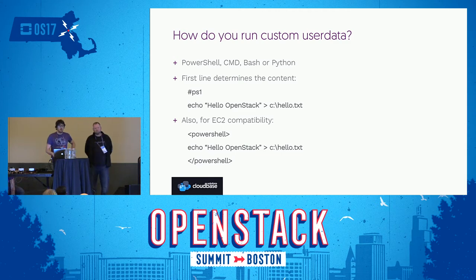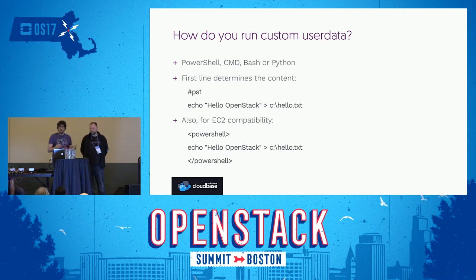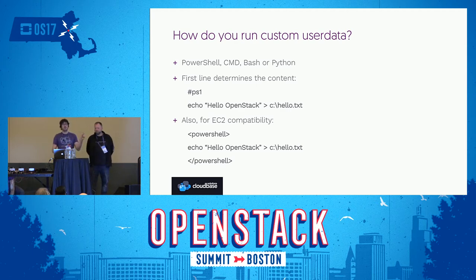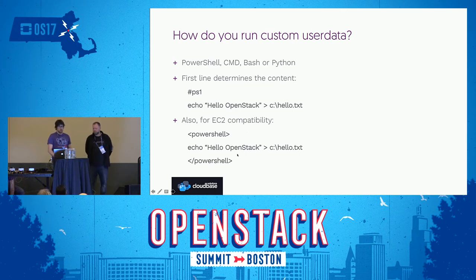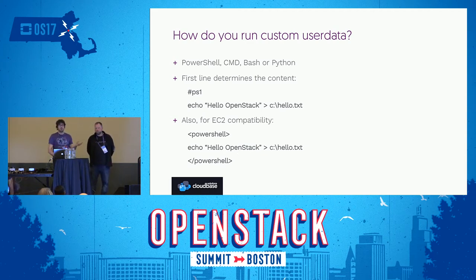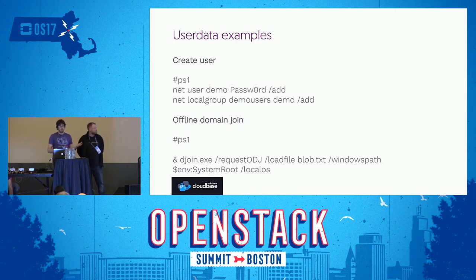A very common question is how to run custom user data. You can run PowerShell, CMD batch files, Bash, or Python. To determine the content of your user data, it's very simple: the first line starts with #ps1 for PowerShell. That's similar to the model you're familiar with in Linux — if it starts with a typical shebang, we know it's a Bash script. We also support the syntax that EC2 uses: a PowerShell tag, the script, and an end tag. Both are supported, meaning the same user data script can work on Amazon EC2 and also on CloudBase Init.